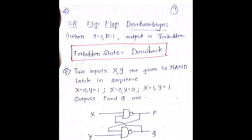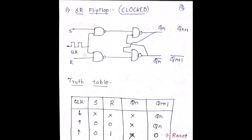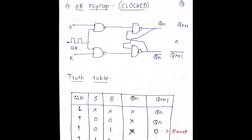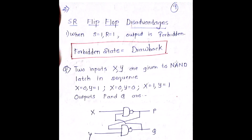What is the disadvantage of SR flip-flop that makes us go for other flip-flops in the future? When the clock is high and S=1 and R=1, the output goes into a forbidden condition. Both QN+1 and QN+1-bar will both be equal to 1, which is not possible. If QN+1 is equal to 1, then QN+1-bar will always be equal to 0. Hence, this is a drawback — it is not possible to have S=1 and R=1 simultaneously.